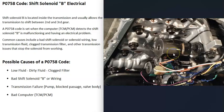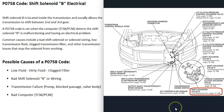The next thing that can cause this is a bad shift solenoid B or the wiring going to the shift solenoid. If there's any kind of issue inside that wiring, that's going to cause problems. The location of shift solenoid B is really going to vary — it depends on the vehicle, the transmission, and different factors. So if you go to work on your vehicle, you will need to get a diagram showing where everything is located, because it's really going to vary depending on the vehicle.